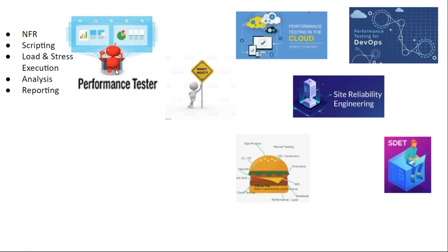When it comes to performance engineering, whether the application is deployed in a data center or in the cloud, the application is still the application. It will have memory problems, thread problems, response time problems, database query issues, and client-side performance issues — irrespective of where it is hosted. Performance engineering is mostly at the application level, and that is common whether the application is in the cloud or in a data center. The progression is: first performance testing, then performance engineering, then cloud and DevOps.